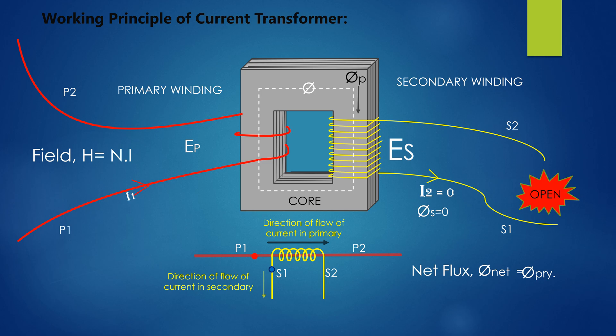As CT burden is low, a few VA, 15 VA to 30 VA, and therefore operating voltage of the secondary winding is generally low. The insulation of secondary winding is used according to such voltage. Beyond this voltage may cause insulation failure and fire hazard. This may cause danger to personnel working on secondary side. Therefore, when primary current is flowing, secondary should never be disconnected.